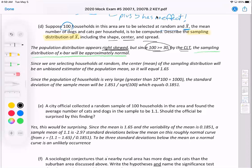I can imagine questions that ask, you know, we check this condition, why are we checking that condition? And then the answer would be, well, we need the sampling distribution of X bar to be approximately normal, to be able to answer probability questions. So that was my shape. Since we're selecting households at random, the center, the mean of the sampling distribution will be an unbiased estimator of a population mean, so it will equal 1.65. I wouldn't recommend to try to use the notation, because if you use the notation wrong, you would lose points. But the correct notation would be something like this, where the mean of the sampling distribution of X bar equals the population mean, which equals 1.65.